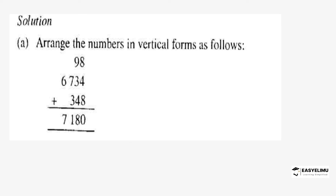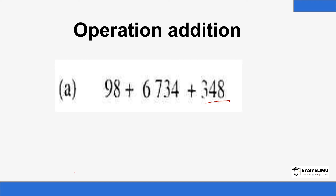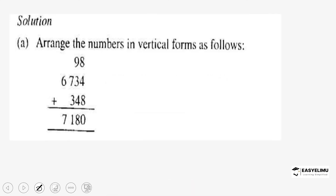Basically what you need to do when you have such a question is arrange the numbers in a vertical form. You can see in the previous example the numbers are arranged horizontally, so the first thing to do is arrange the numbers vertically. As you arrange them vertically, you must make sure they are arranged according to the place values of the digits. For example, 8 is in the 1's place value, so all the digits in the 1's place value must be arranged along the same line.